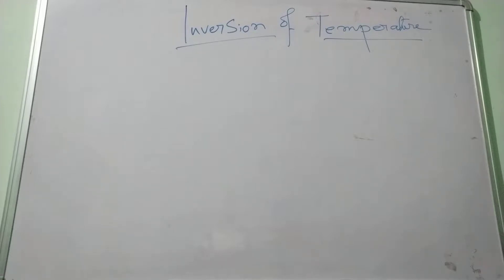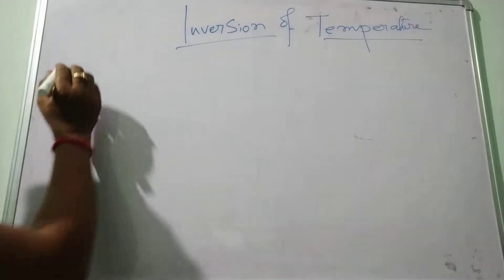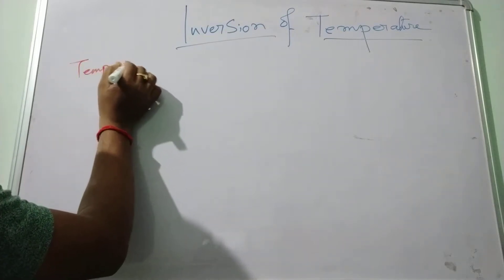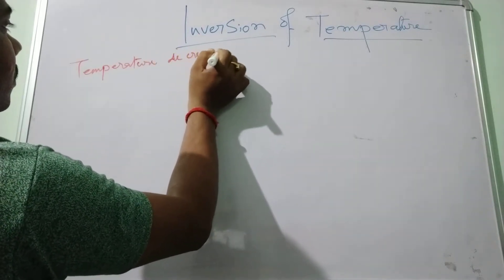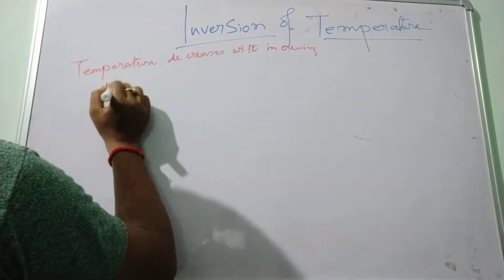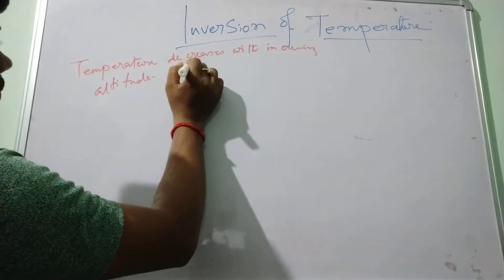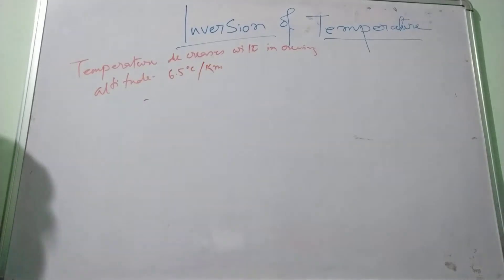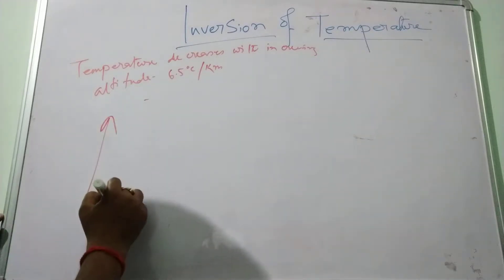Today we are going to study about the inversion of temperature or temperature inversion, which is the reverse of the normal behavior of temperature in the troposphere. Normally, temperature decreases with increasing altitude at a rate of 6.5 degrees centigrade per km, which is known as the lapse rate. But in the case of temperature inversion, with increasing altitude the temperature also increases.